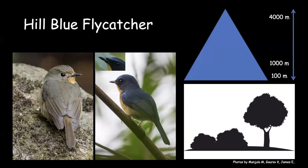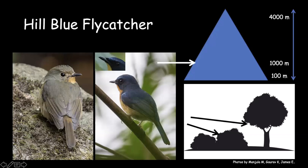Now for slightly difficult flycatchers to identify: the hill blue flycatcher. One thing to notice is leg color — hill blue flycatcher and large blue flycatcher are the only two Cyornis flycatchers in northeast India with pale-colored legs. The large blue flycatcher always has a much thicker and broader bill and a very distinct slow mournful song compared to the hill blue flycatcher. Both can be found at similar elevations, up to about 1,000–1,600 meters in certain cases.